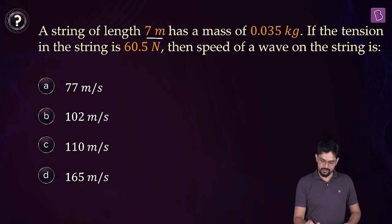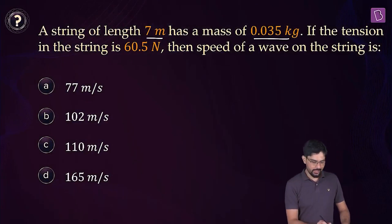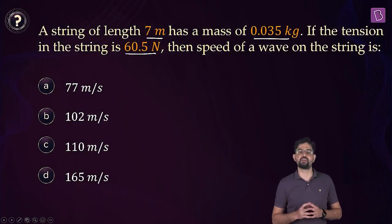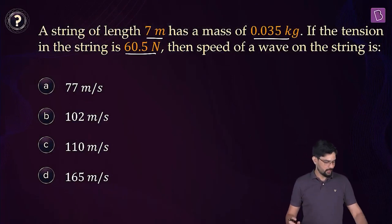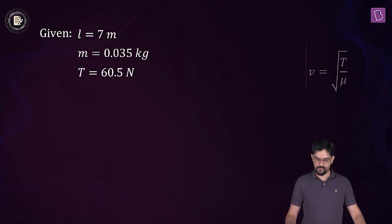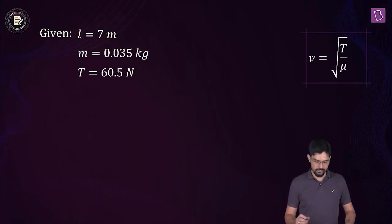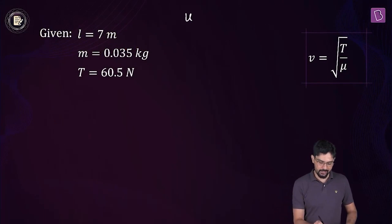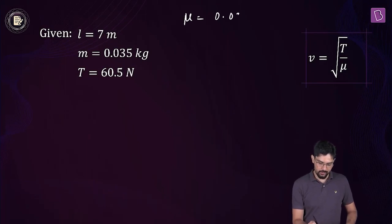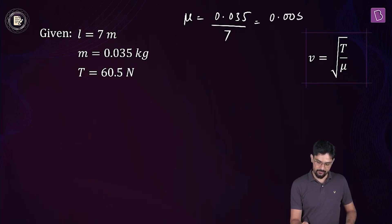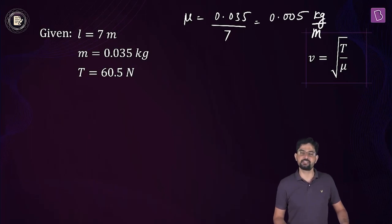Given the length of the string, the mass of the whole string, and the tension in the string, you simply have to find out the wave speed using the formula square root of T divided by mu. Mu is the mass per unit length. The total mass is 0.035 kg and the total length is 7 meters, giving a linear mass density of 0.005 kg per meter.